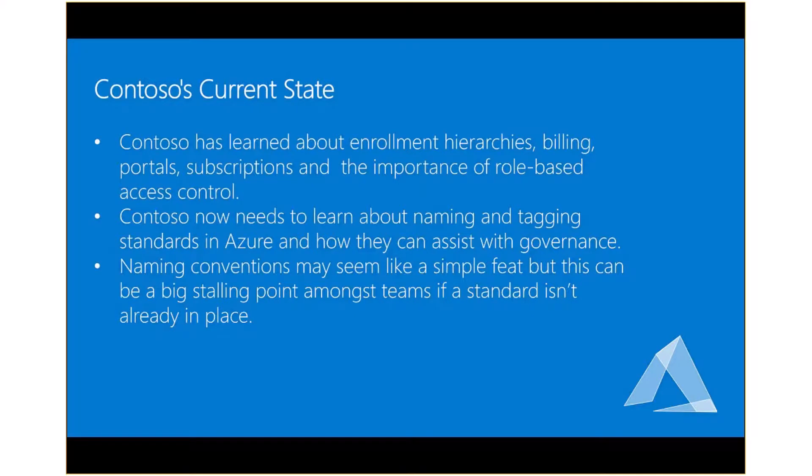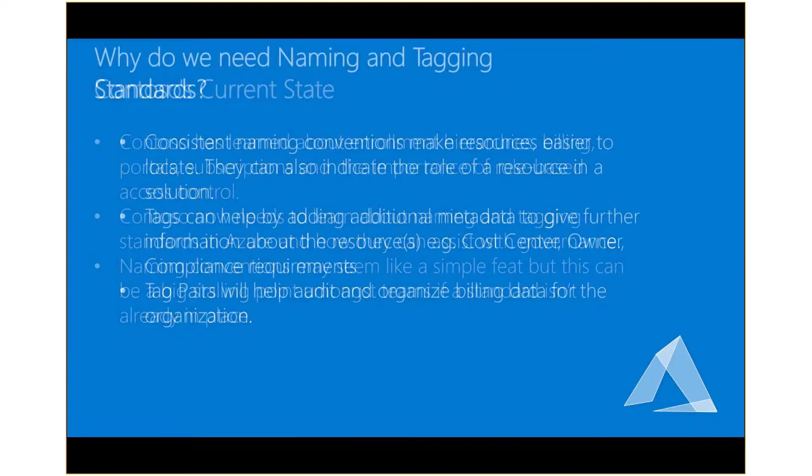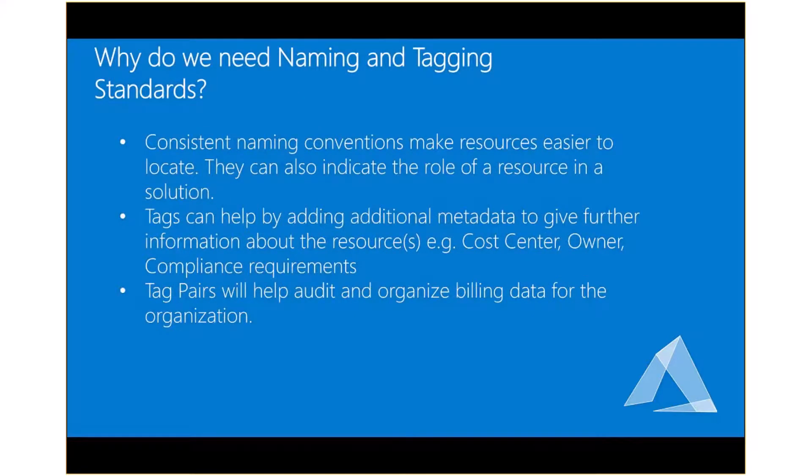It's not a child you're naming — though it might feel like it! Why do we need naming and tagging? Consistent naming makes resources easier to locate and identify, and can indicate a role. Tags can further help you evaluate what resources are used for, bringing additional metadata that you can report on, like cost center, who owns that VM or resource, and any compliance requirements on the data inside.